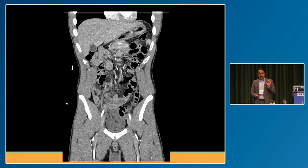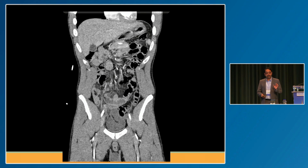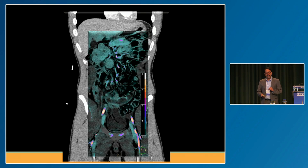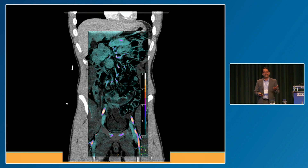In trauma, absent iodine uptake in bowel loops is a very good indication of bowel injury. This loop in the pelvis has no iodine uptake — you can see it's a U-shaped loop. This was a bucket handle tear confirmed on surgery.